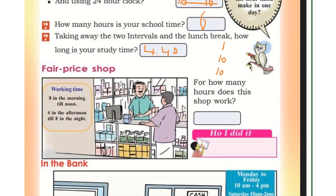How many hours does this shop work? The shop is open from 8 AM to 12 noon — that is 4 hours. Then from 4 PM to 8 PM — that is another 4 hours. So the shop works 8 hours in total.